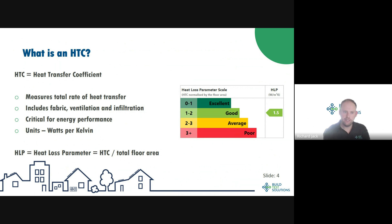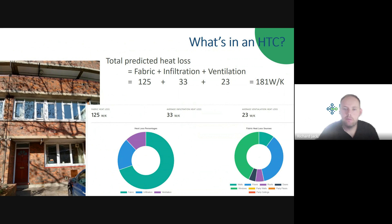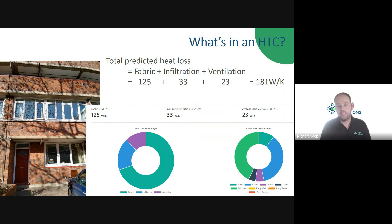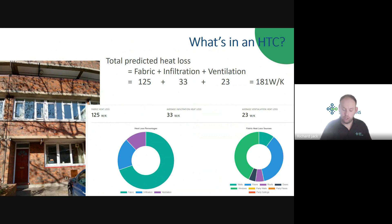To make this more tangible, here we're looking at the predicted heat transfer coefficient for a typical flat built in the 1960s. The majority of the heat loss is predicted to be through the fabric of the building, with significant contributions from infiltration and ventilation. Looking at the fabric in particular, most of that heat loss is predicted to be through the floor and the windows — because the building has a lot of glazing, and has heated flats on either side and above, so it's not predicted to have high heat loss through the walls.